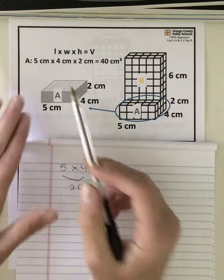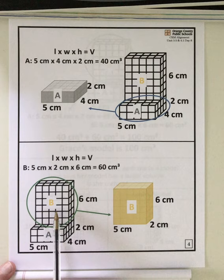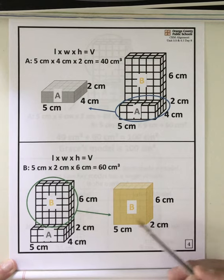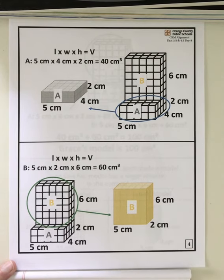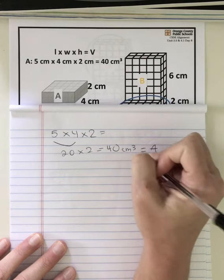So your first step: cut it. Second step: find the volume of A. Now let's go to our third step—we're going to find the volume of B. For B, the new dimensions are 6, 5, and 2.